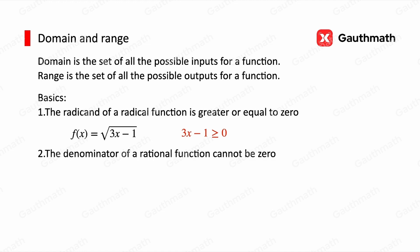The second one: the denominator of a rational function cannot be zero. For example, f(x) = 1/(3x - 1), so 3x - 1 ≠ 0.